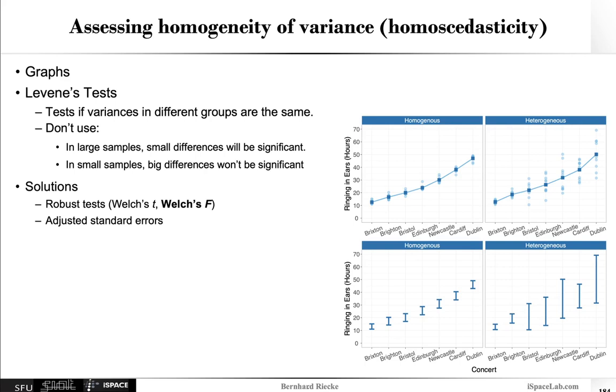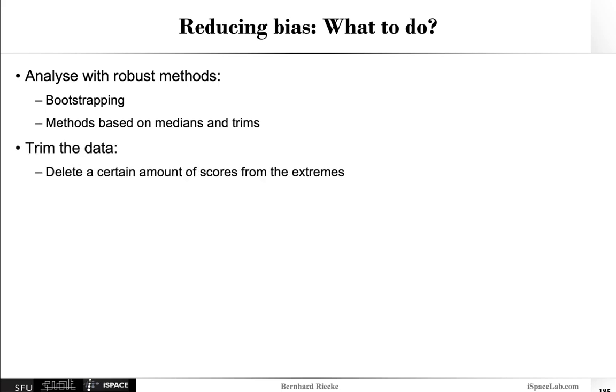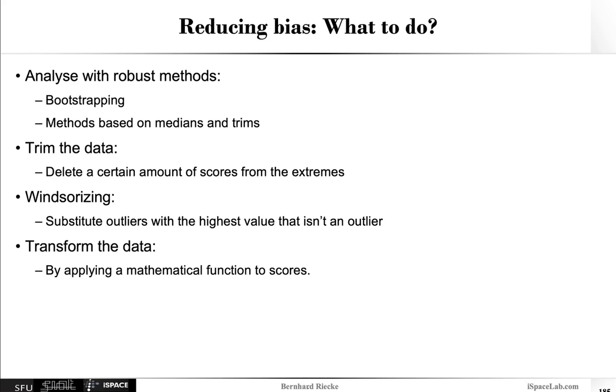Okay but so what do you do actually when you have some bias in there in the data? So there's various things you can do about this. One possibility is always to try and analyze with more robust methods so you could do something like bootstrapping or use methods based on medians and trims. We will go over that a bit more in the next slides. So you can trim the data so basically delete a certain amount of scores from the extreme sides. You can do winsorizing so basically substituting outliers with the highest value that isn't an outlier. It's a bit different than trimming because you don't reduce the amount of data but you just replace the extreme outliers with the less extreme values. You can try to transform the data by applying some kind of mathematical function to the scores. Just keep in mind that that actually changes the way you analyze the data and what the results really mean. And in general you can run non-parametric statistics which are often based on rank ordering the data to eliminate the effect of outliers and all kinds of biases you might observe.